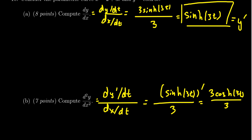The 3s cancel again. And so then we end up with the second derivative being cosh of 3t. So we then have the first and second derivatives now calculated.